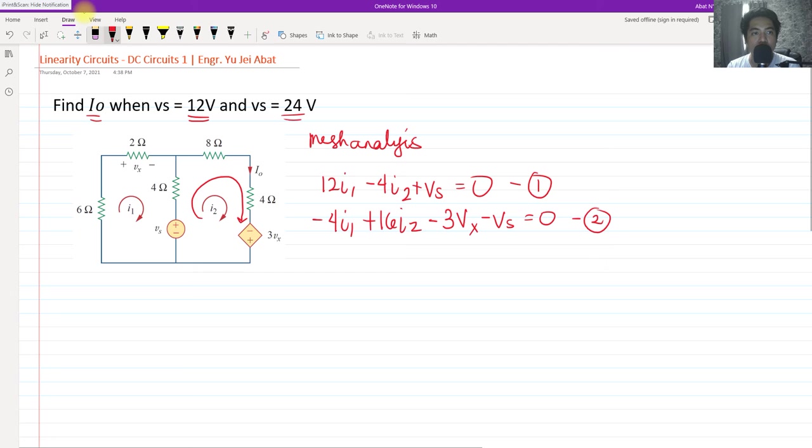From there, we can calculate the values of I sub O. We have to manipulate these variables. Take note that V sub X is simply equal by Ohm's law to the I sub 1 current flowing here multiplied by 2 ohms. So we have V X equals I sub 1 times 2 ohms, so it's 2 I sub 1. We can substitute this value on our equation 2.